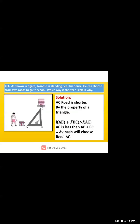Question 3: Abhinash is standing near his house and has to choose only one road — which way is shorter? If Abhinash chooses road AC, he goes directly to school. If he goes via AB then BC, that is a longer route. So AC is the shorter road by the property of a triangle.